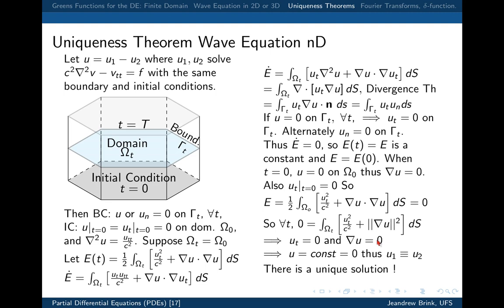We have shown that if we find a solution to the wave equation satisfying given boundary and initial conditions, it is the unique solution. This is the last uniqueness theorem we'll cover. The key takeaway is that uniqueness holds for any linear PDE regardless of dimensionality, and the technique — constructing a positive energy functional that is conserved — is general. Next time we'll begin finding the actual Green's functions for the wave equation.